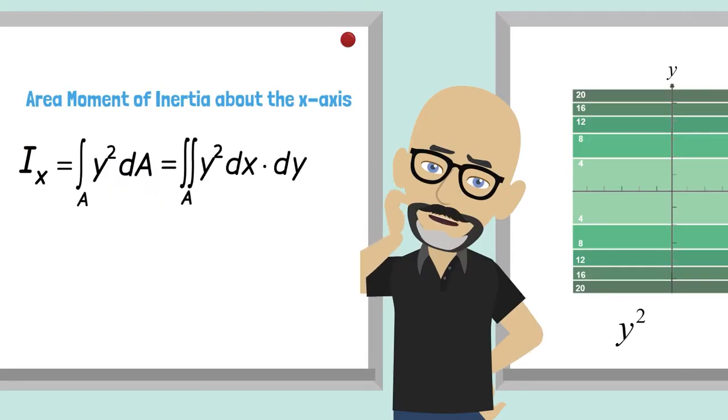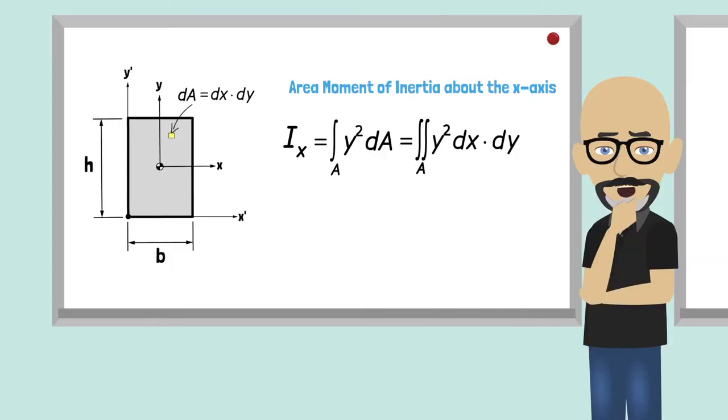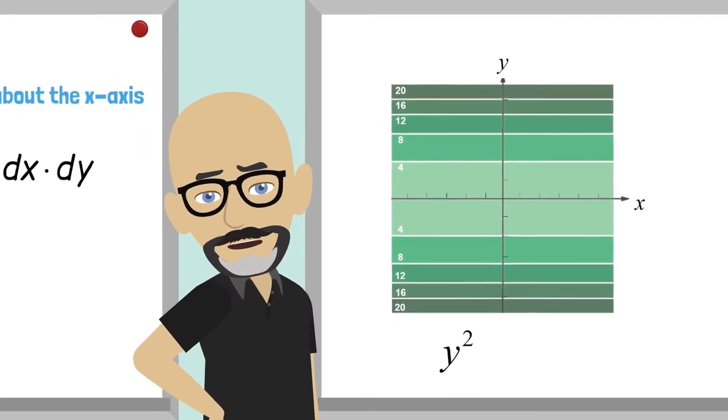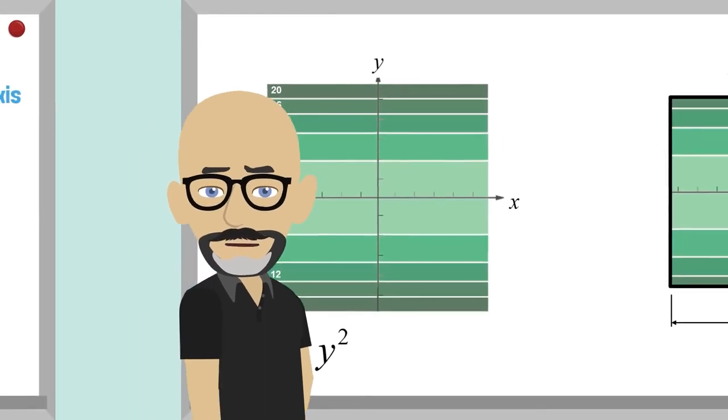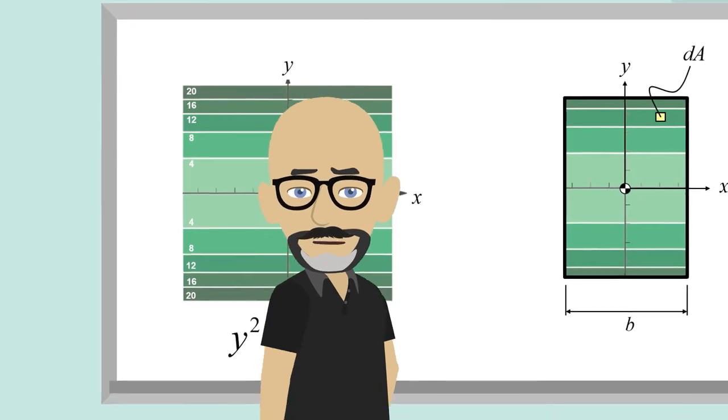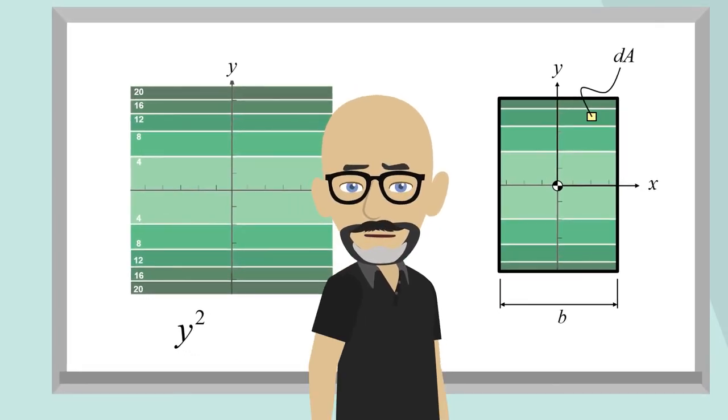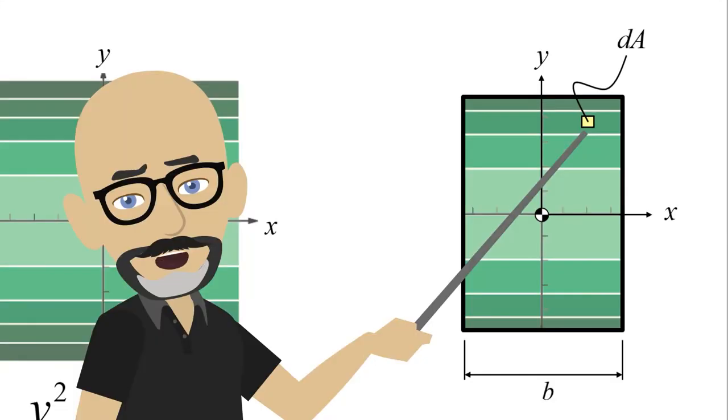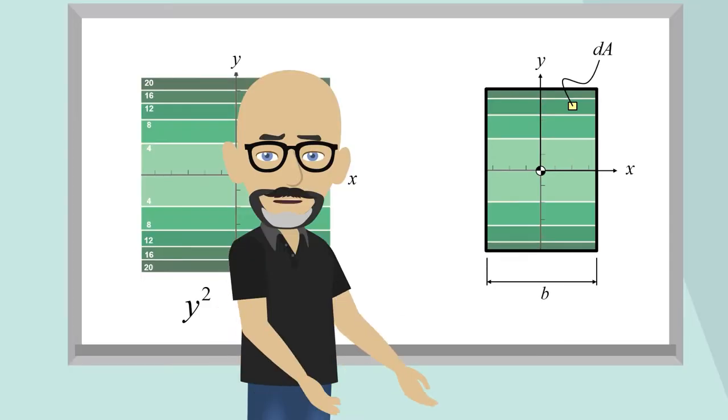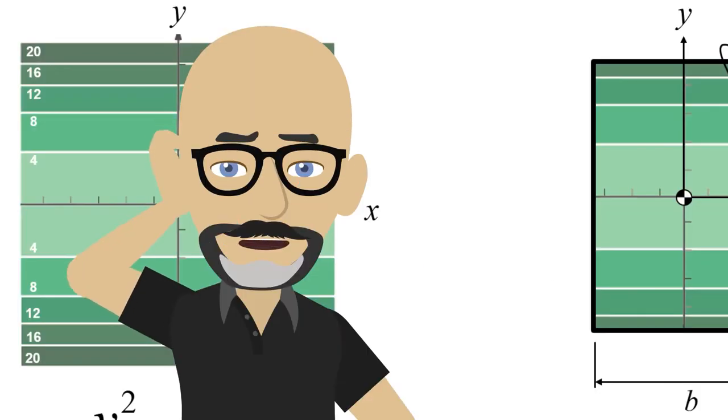However, we can be a bit smart in how we define our area element to simplify this integral. Our integration is effectively the summation of the function y squared times area over the entire cross section. So if we take a contour plot of the function y squared and overlay it onto our geometry for the given axis system, we can visualize what we are effectively summing over the domain of the shape. As our integral is an infinite summation of area elements where the function being integrated does not vary, the area element needs to be infinitely small so that the value of our function, y squared in this case, is constant over the area element. But we can see from the contour plot that y squared is actually constant across the entire width of the section. Can we exploit this to simplify our integral?